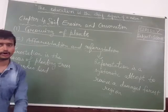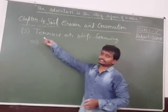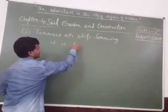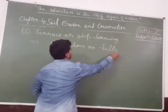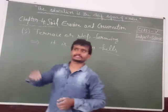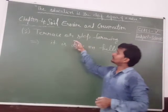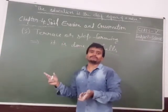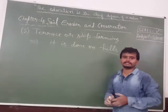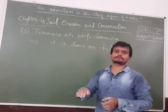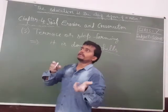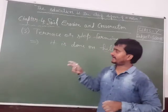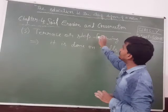The next method is terrace farming or step farming. In this, farmers cut hills into steps. These steps help to stop the soil in a particular place. Because on a hill there is a slope, and when water comes with force it moves the fertile topsoil from one place to another. By cutting steps, we reduce the force of water and protect the soil from moving, which is why this is also known as step farming.